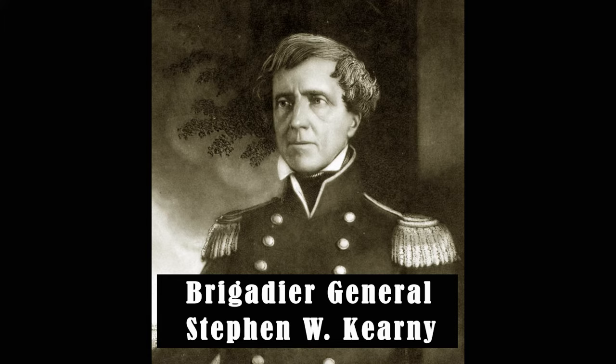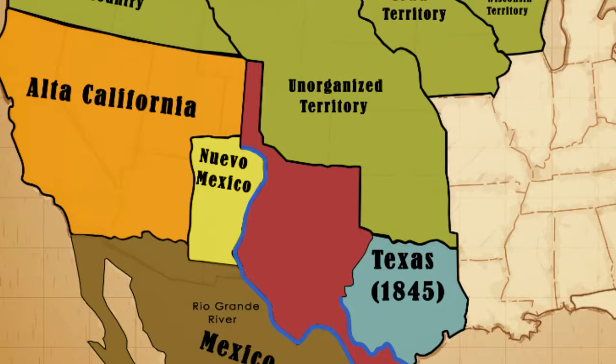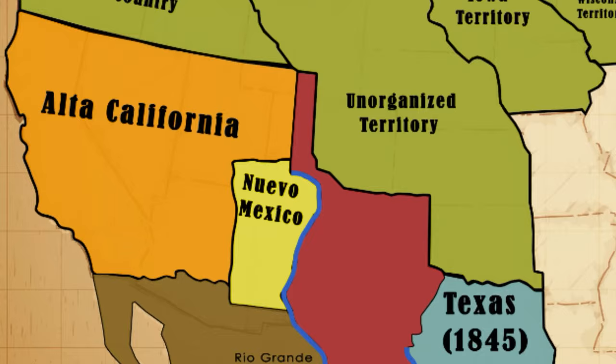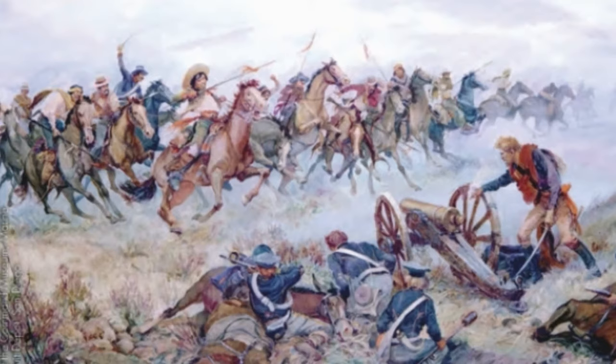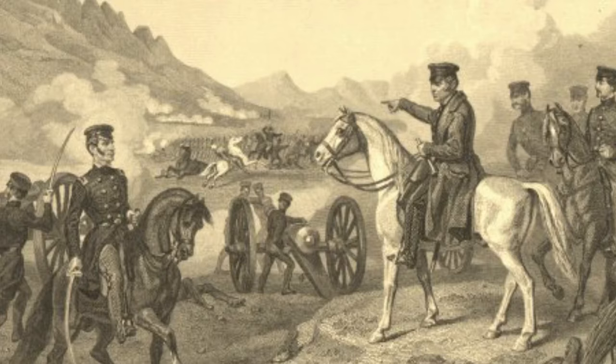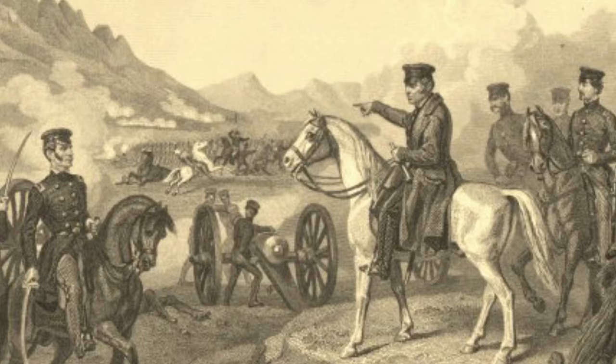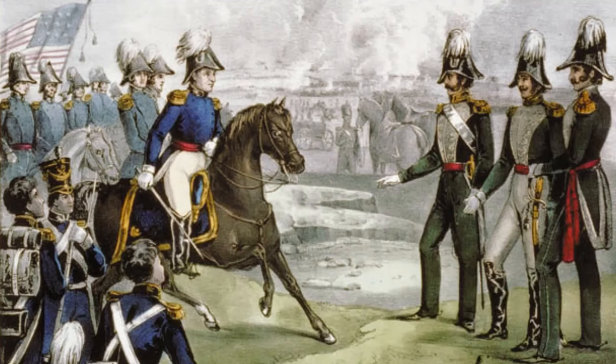From June 1846 to January 1847, Polk sent Brigadier General Stephen W. Kearney to take Nuevo Mexico and Alta California. After resistance primarily in California, the U.S. was successful in seizing control of Mexico's northern territories. Instead of pursuing no further action per President Polk's orders, Taylor disobeyed Polk and advanced further into Mexico, itching for one more fight.